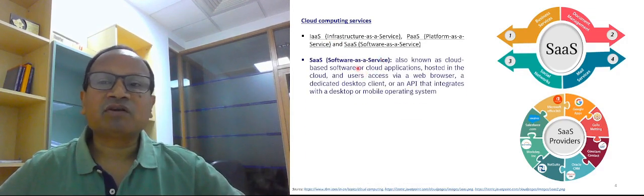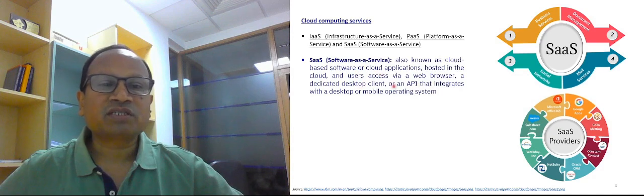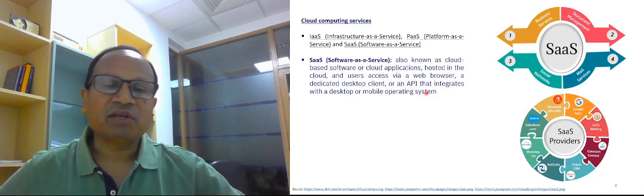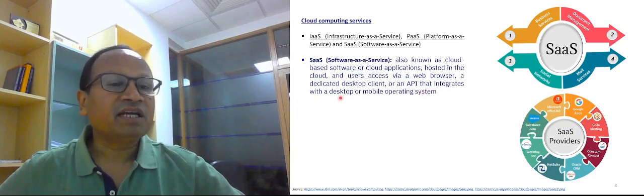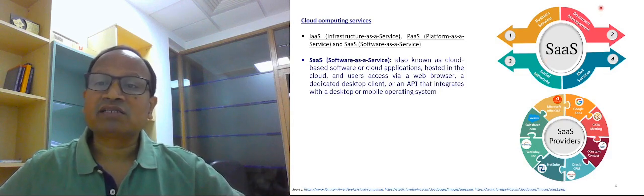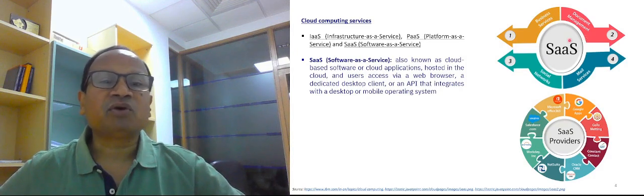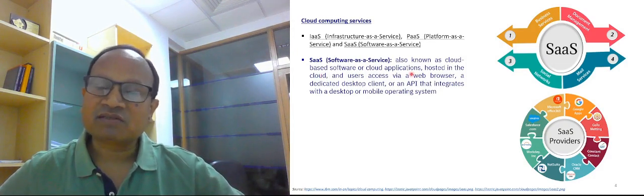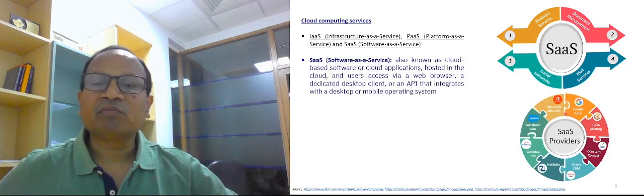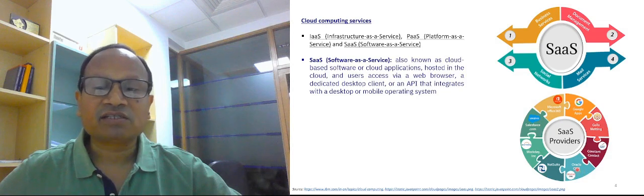Software as a Service (SaaS) is also known as cloud-based software or cloud applications hosted in the cloud. Users can access it via a web browser, a dedicated desktop client, or an API that integrates with a desktop or mobile operating system. Examples include social networks, mail services, document management, Microsoft 365, Google Apps, GoToMeeting, and Salesforce.